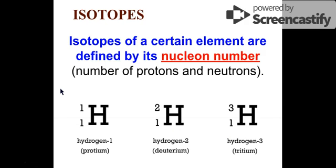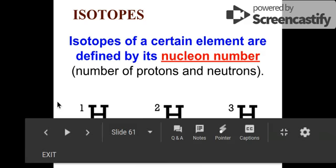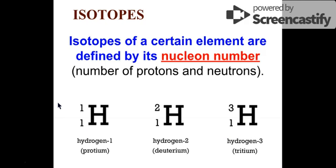That's why the mass numbers of these isotopes are different. The mass numbers are the numbers on the upper left side of the symbol of the element. You can see on your screen that hydrogen is the same element — all are hydrogen — but you can either have hydrogen-1, which is protium; hydrogen-2, which is deuterium; or hydrogen-3, which is tritium.